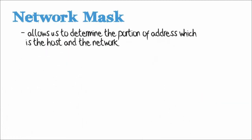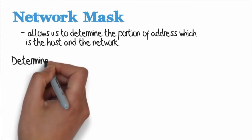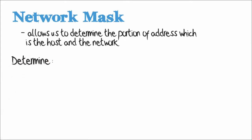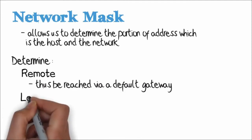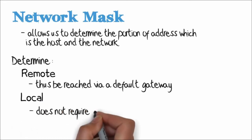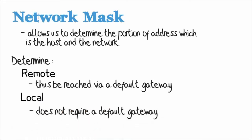A network mask allows a device to determine which portion of the address is the host portion and which portion is the network portion. This allows a local PC to determine whether the device it wants to communicate with is on a remote network and is thus reachable via the default gateway, or if the device is on the local subnet and therefore does not require the use of a default gateway. So if PCA and PCB are in the same subnet, no default gateway is required; but if they're on different subnets, a default gateway would typically be required.